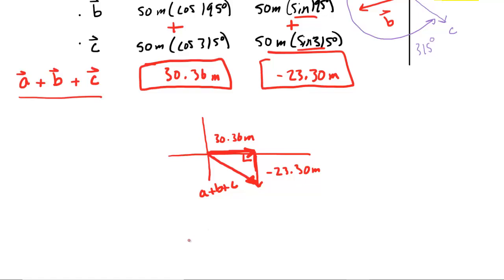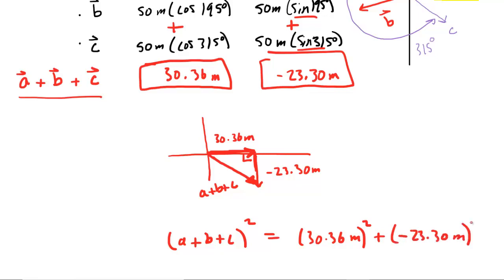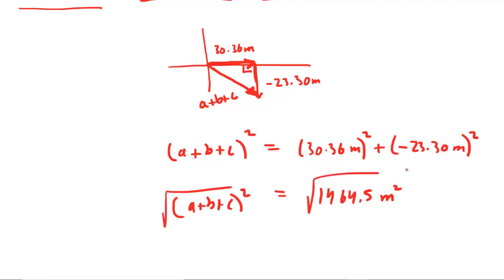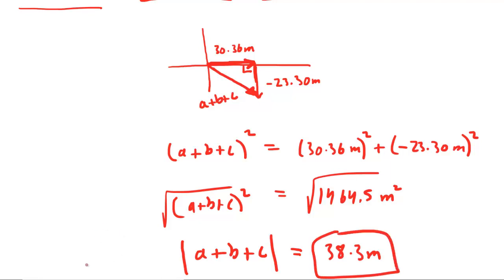Hopefully we know we can compute the magnitude using the Pythagorean theorem. So |A+B+C|² equals 30.36² plus (−23.30)², which is a² plus b² equals c². When you compute the right-hand side, you get about 1464.5 meters squared. Then to get the magnitude, square root both sides, and the magnitude of A plus B plus C is about 38.3 meters. That is the correct answer to part A.